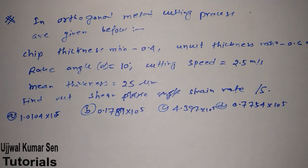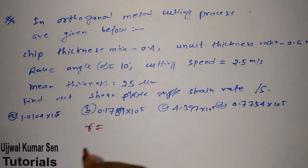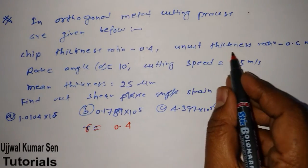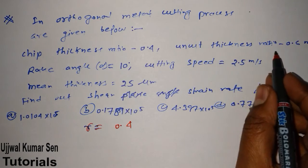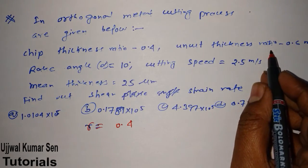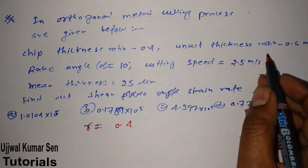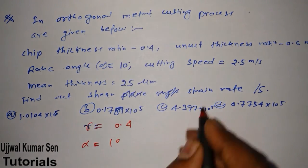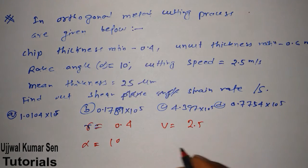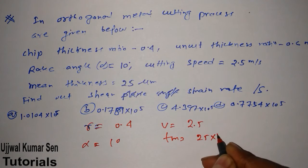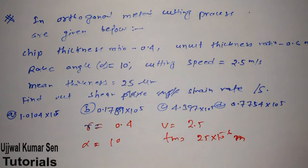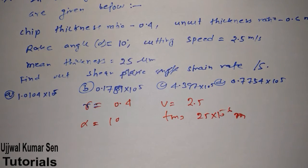The question is: In an orthogonal metal cutting process, the following are given — chip thickness ratio r = 0.4, rake angle α = 10°, cutting speed v = 2.5 m/s, and mean thickness tm = 25×10⁻⁶ m (since micro is given). We have to find the shear strain rate.